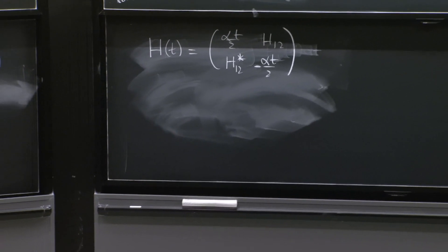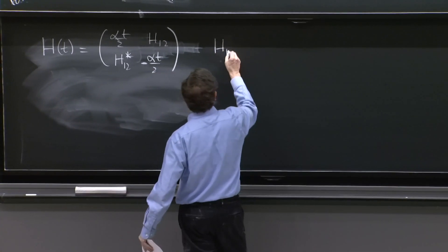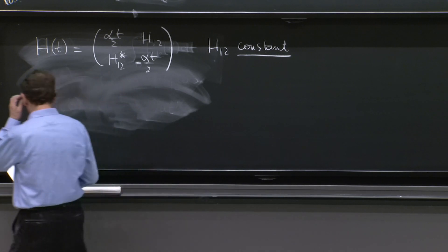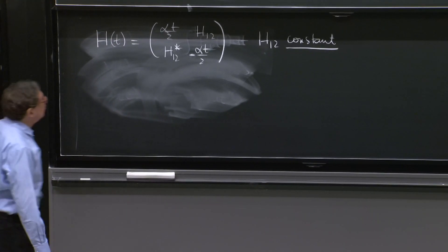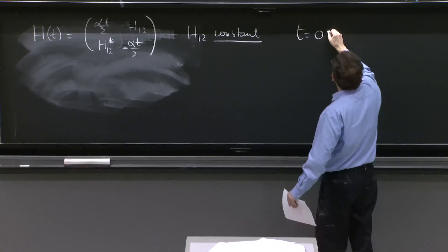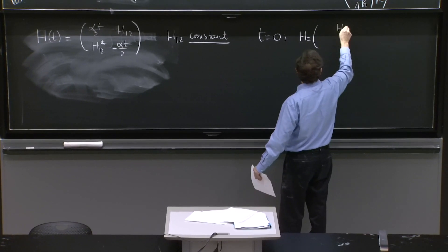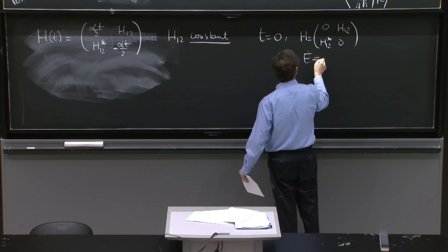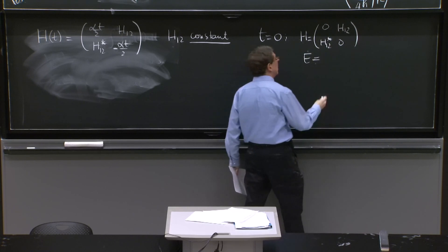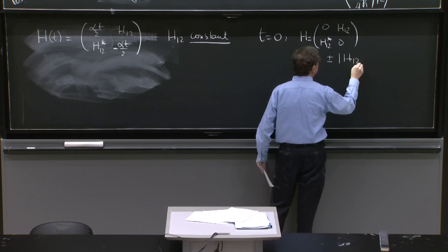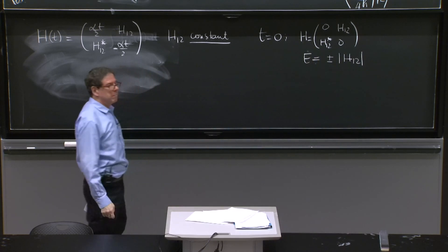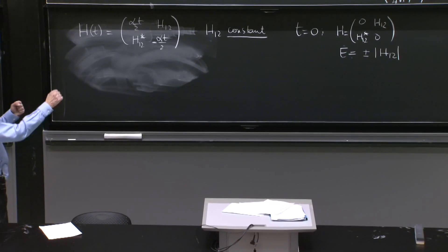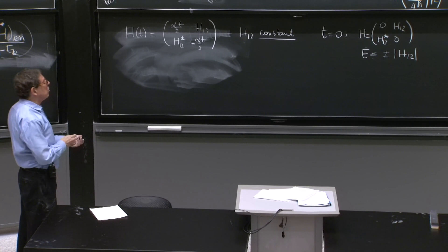There are several ways of thinking about this. H₁₂ is going to be constant in time — it's a number — and H₁₂* is its complex conjugate. If you look at t equals 0, H becomes just the matrix with H₁₂ and H₁₂*. The energy eigenvalues of this matrix are plus or minus the norm of H₁₂ — the absolute value of H₁₂. Just put in a couple of lambdas, calculate the eigenvalues; it involves H₁₂ times H₁₂*, which is the square of the norm of H₁₂.